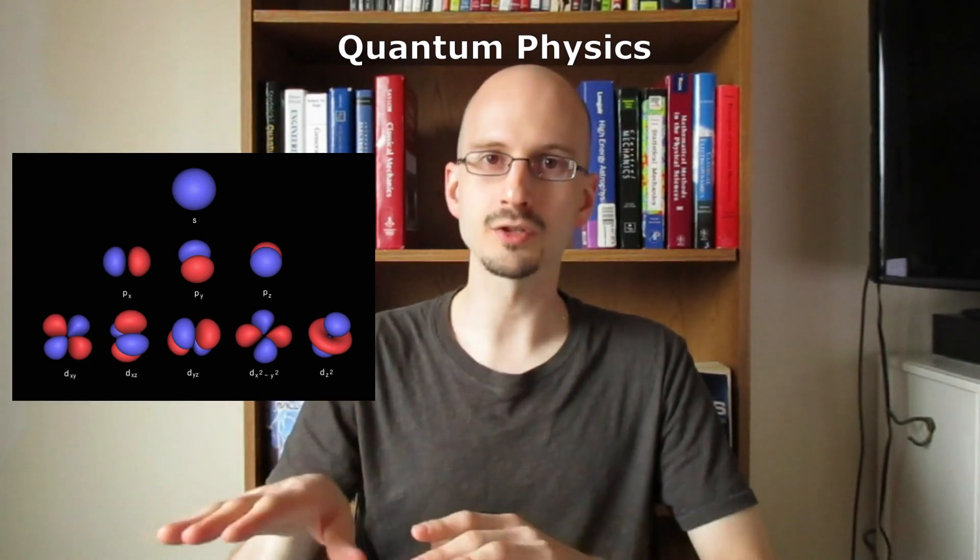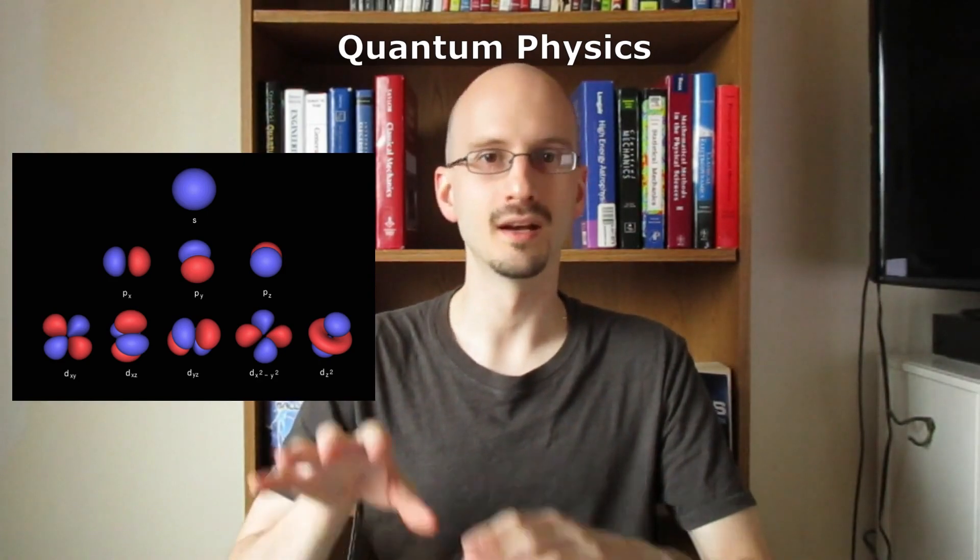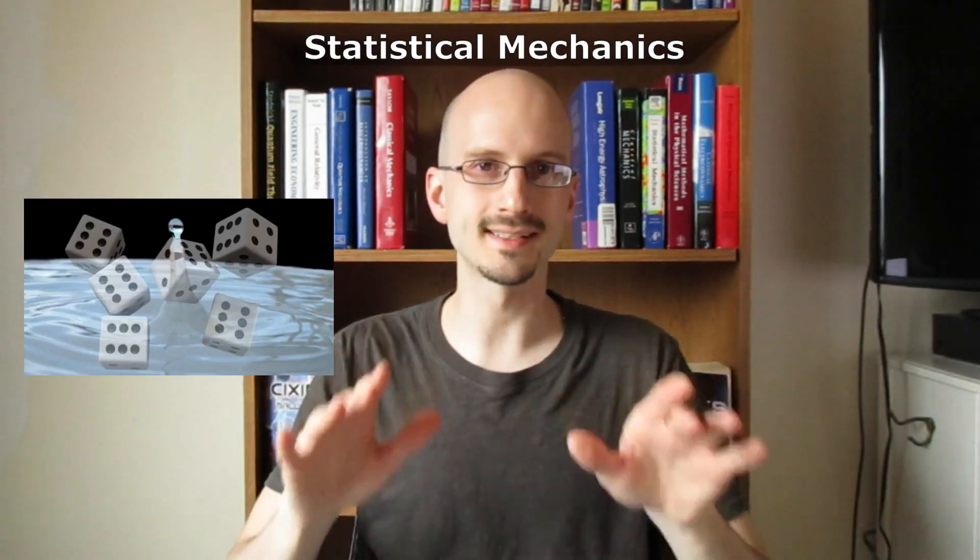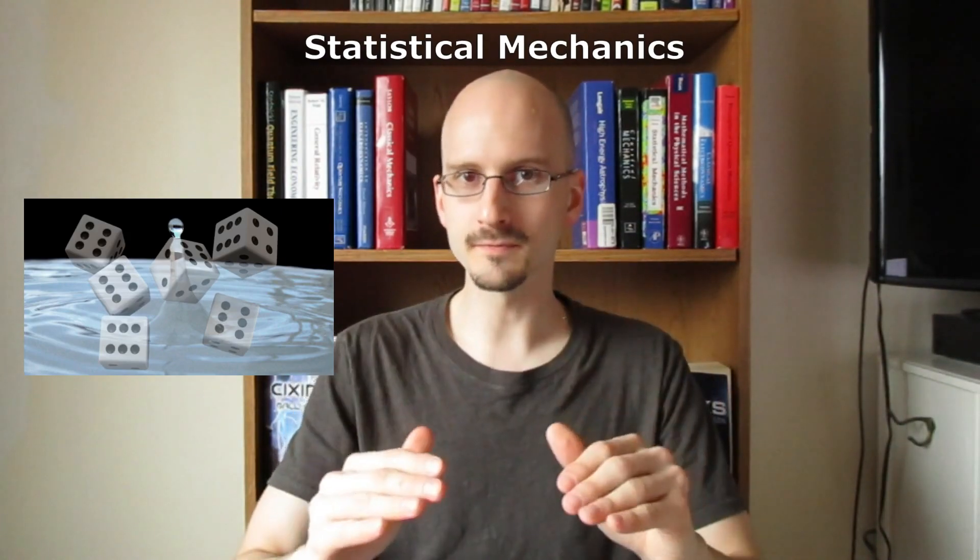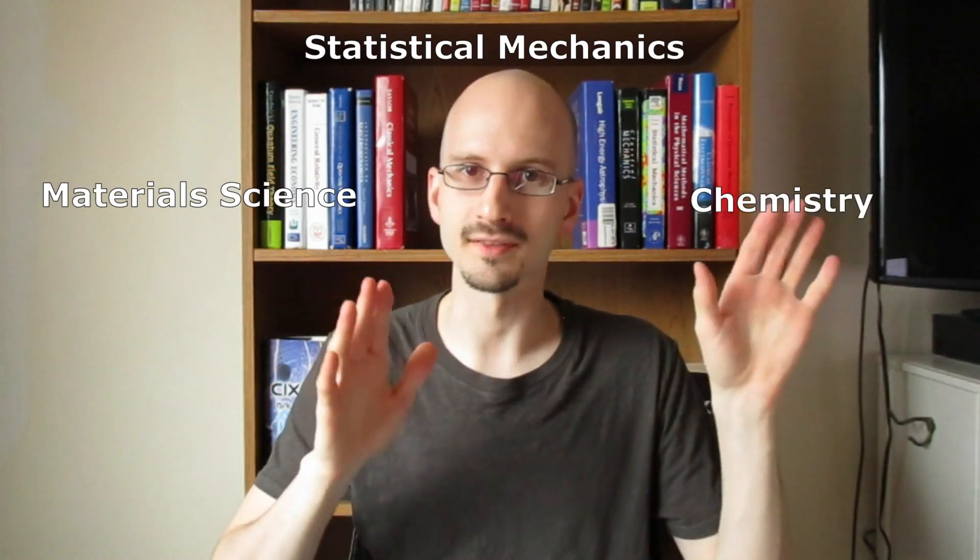These pictures are pictures of the discrete allowed energy wave functions of electrons in atoms. Using another field of study called statistical mechanics, we can see how quantum physics leads to the physics of materials and the emergence of chemistry.